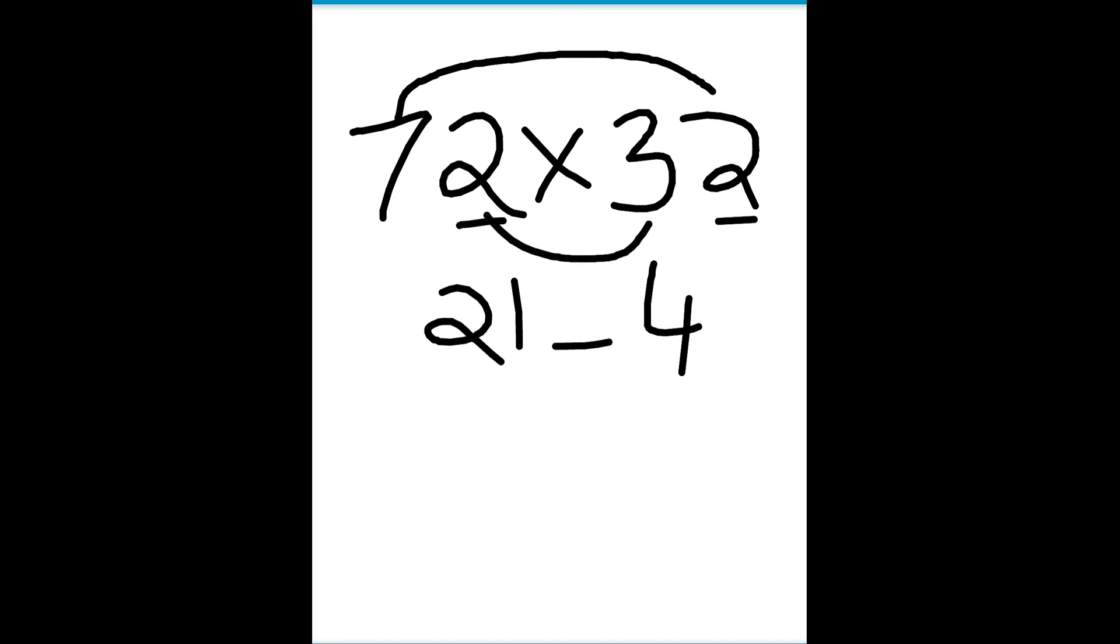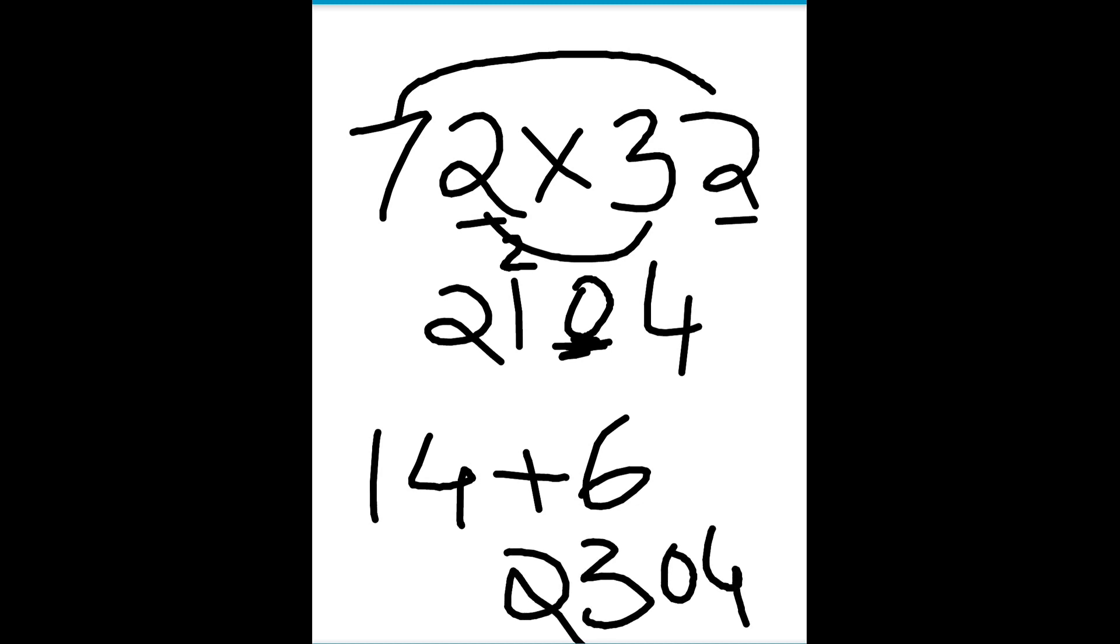Now multiply 7 with 2 and 2 with 3 and add both of that. So 7 times 2 is 14 plus 2 times 3 is 6, and 14 plus 6 is 20. But we have only one blank here, so we'll fill 0 here and 2 will be taken as carry here. That means the answer is 2304.